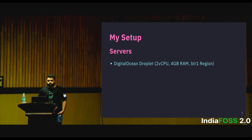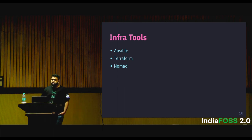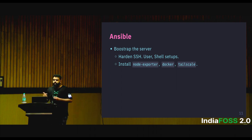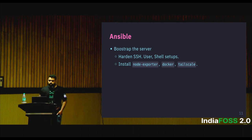This is my server setup — a fairly simple setup where I have three DigitalOcean droplets with minimal configuration. For the software, I use three tools primarily. Ansible is used for initial configuration of the server — installing packages, adding SSH keys, doing SSH hardening like removing passwords and disabling root login. To avoid doing these things manually again and again, I write a configuration and run it in an automated fashion.